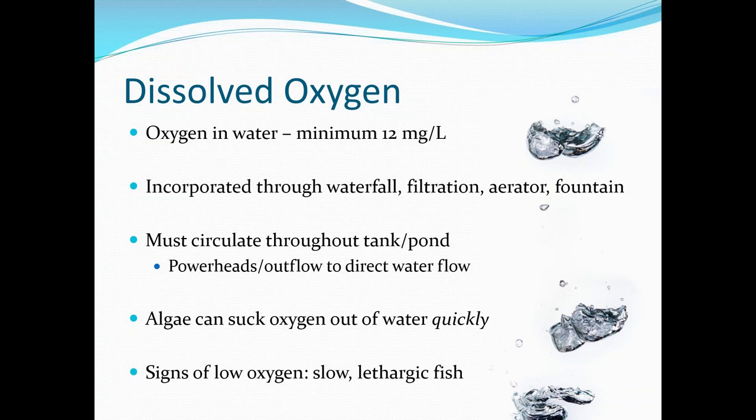Signs of low oxygen include slow, lethargic fish. Basically, if your pond or tank looks like a stagnant puddle and your fish really don't want to move, adding oxygen is a great thing to do. If you are going to add aeration, make sure the bottom of your pond or tank has been cleaned recently, because we're going to talk about hydrogen sulfide, which can be released if you put an aerator on top of a big pocket of it.